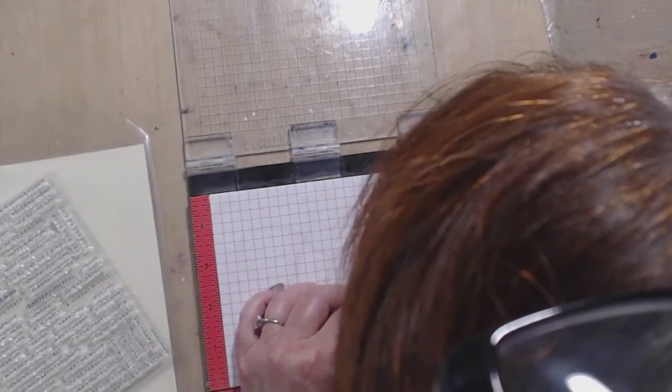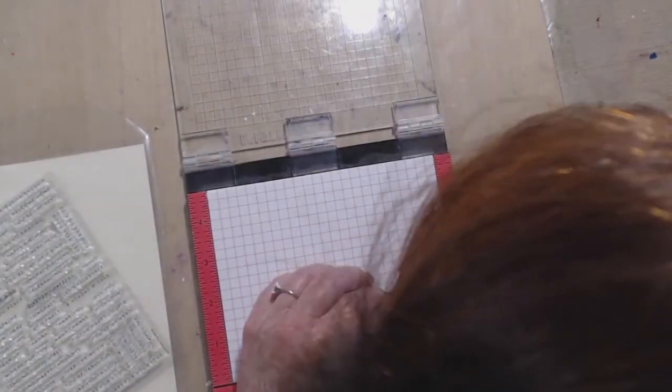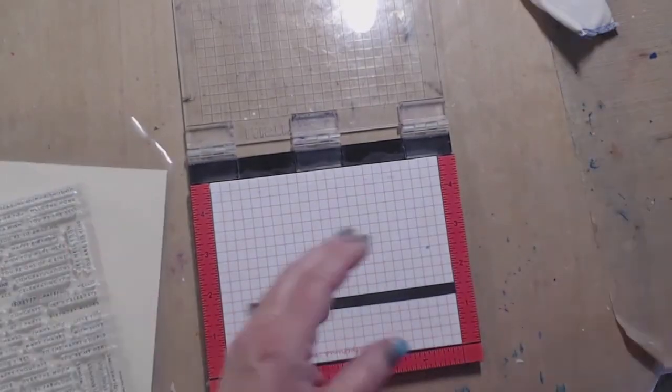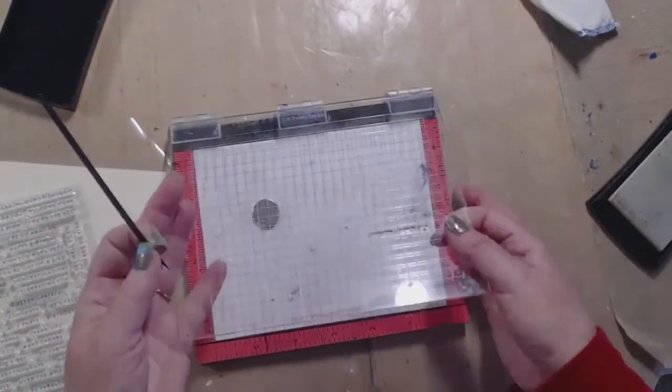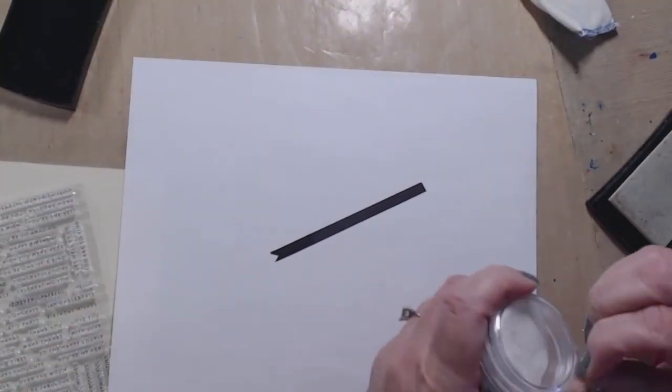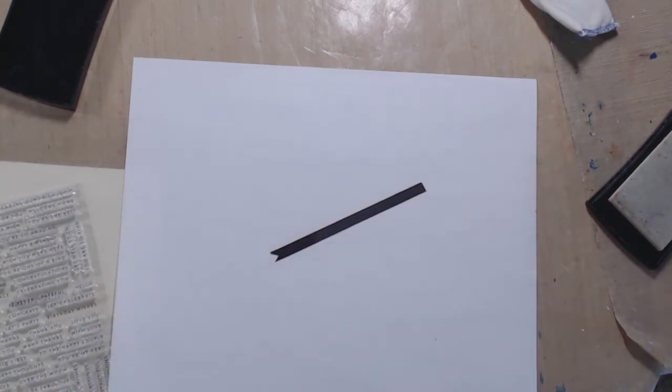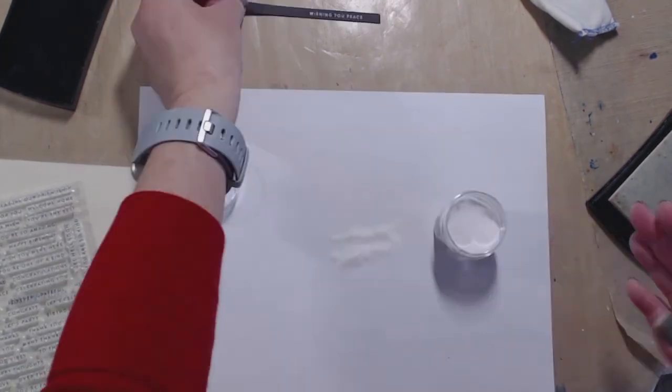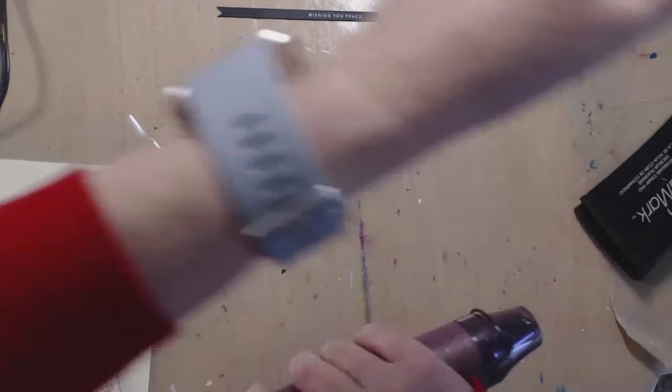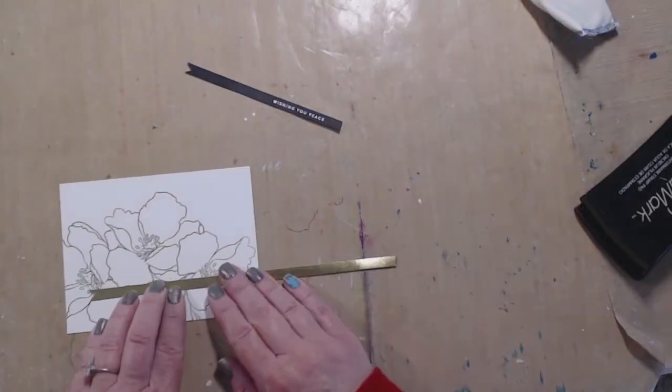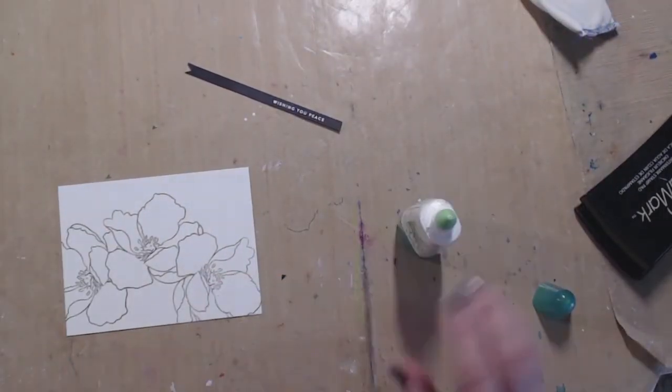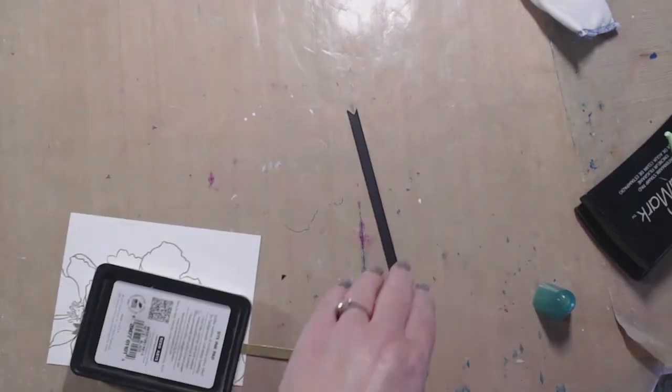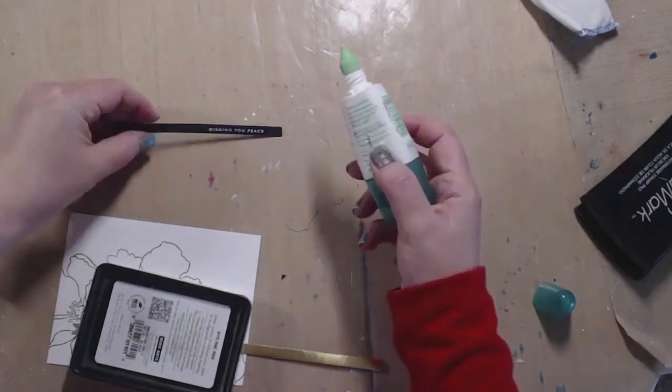I'm using Simon Says Stamp tiny sentiment stamps here and I am going to white emboss that in some brand new white embossing powder from Ranger. I'm going to glue the gold cardstock strip down and then the black down.